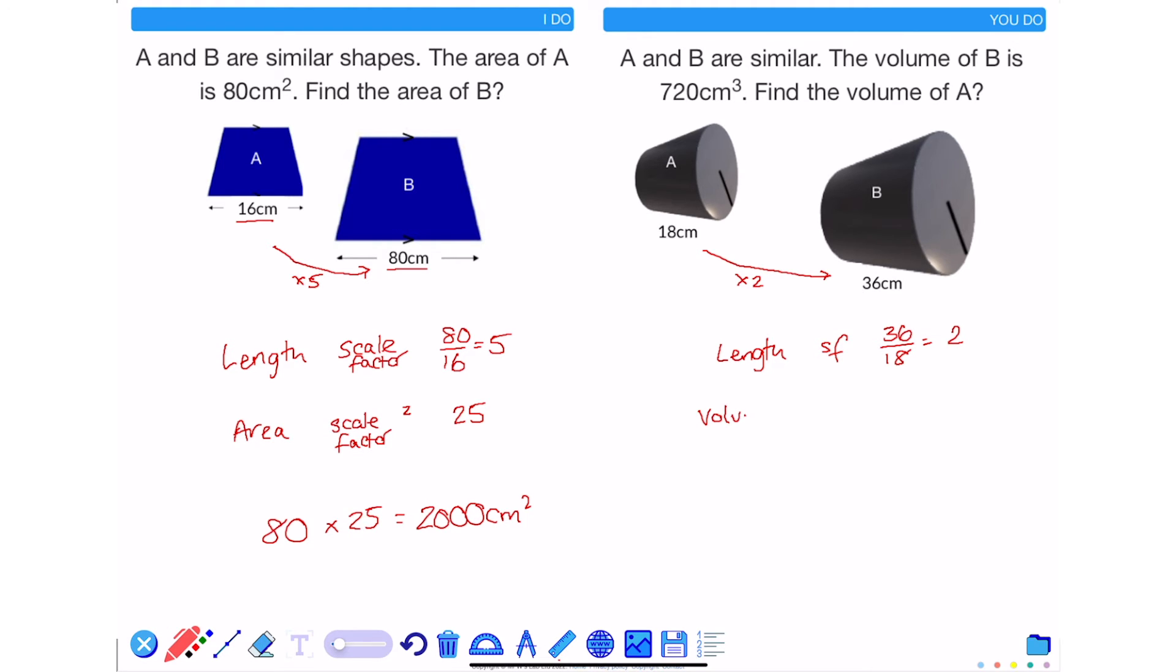The scale factor between two similar shapes with regards to volume is the scale factor cubed. The scale factor between any two corresponding sides is cubed. So 2 cubed is 8.